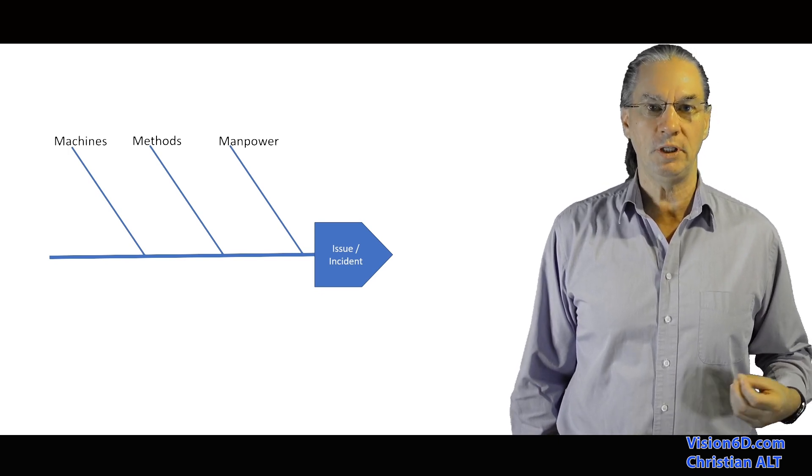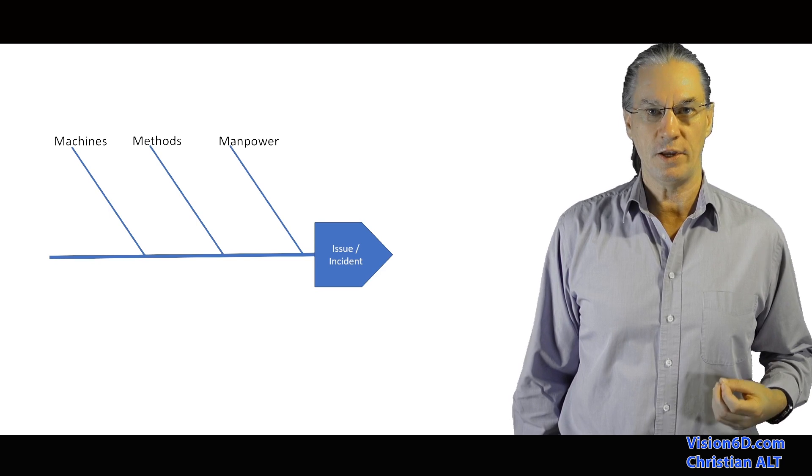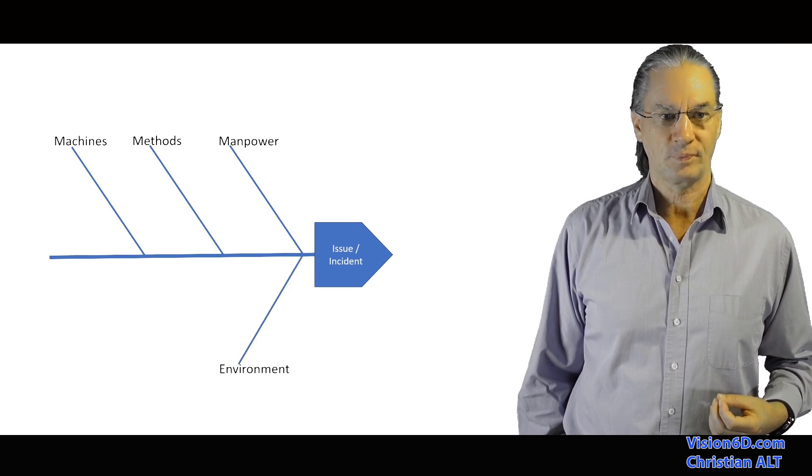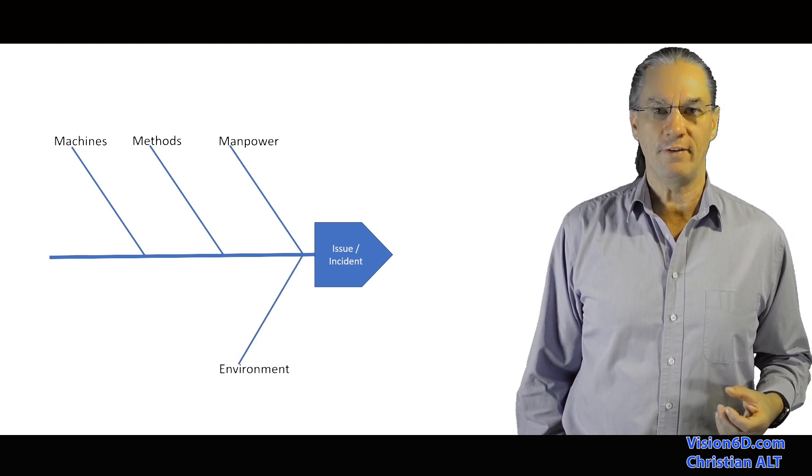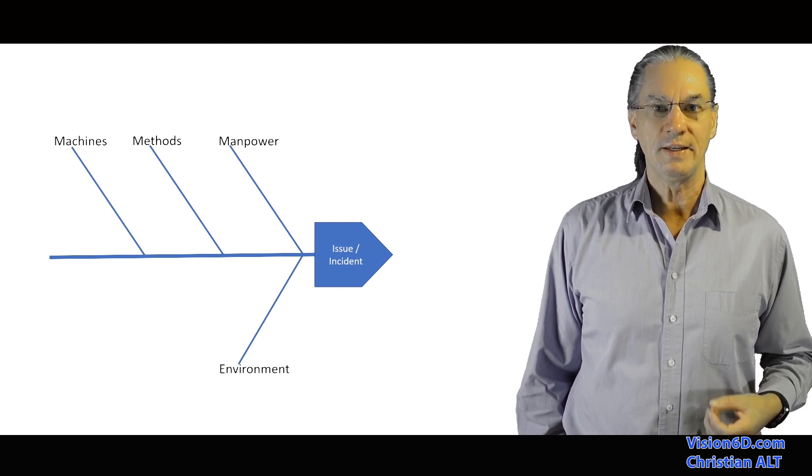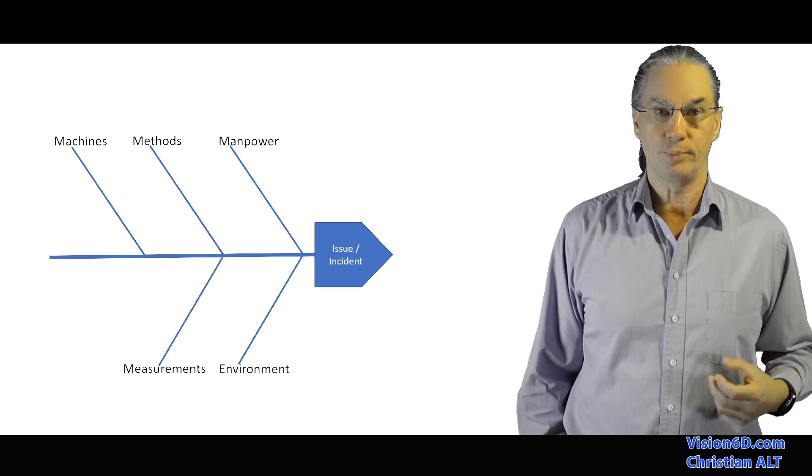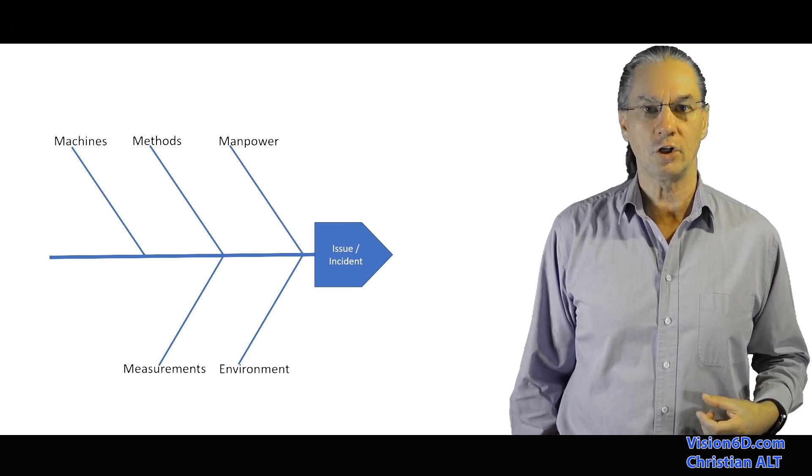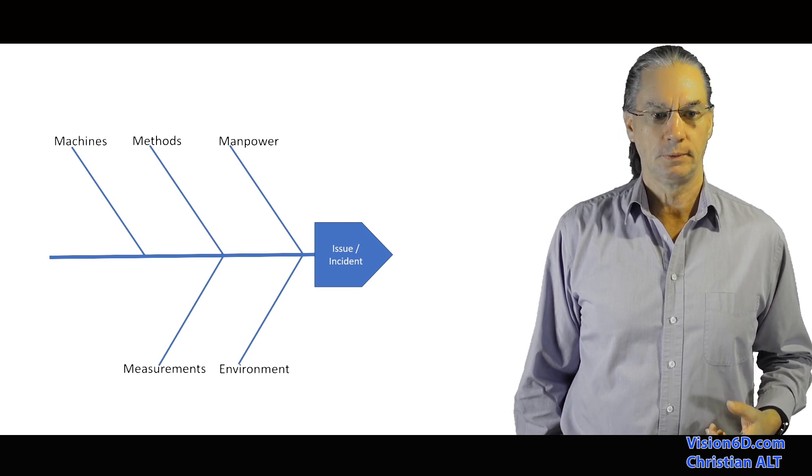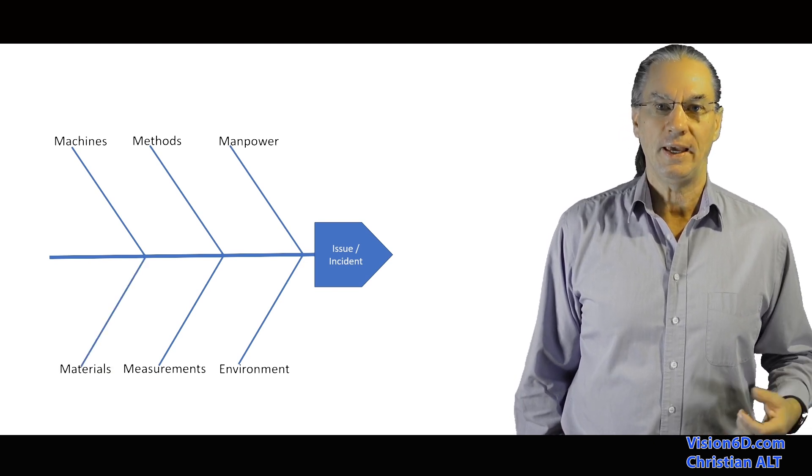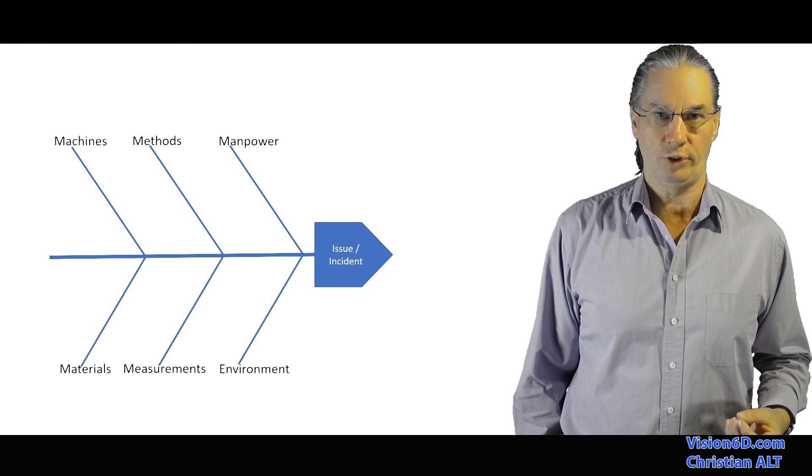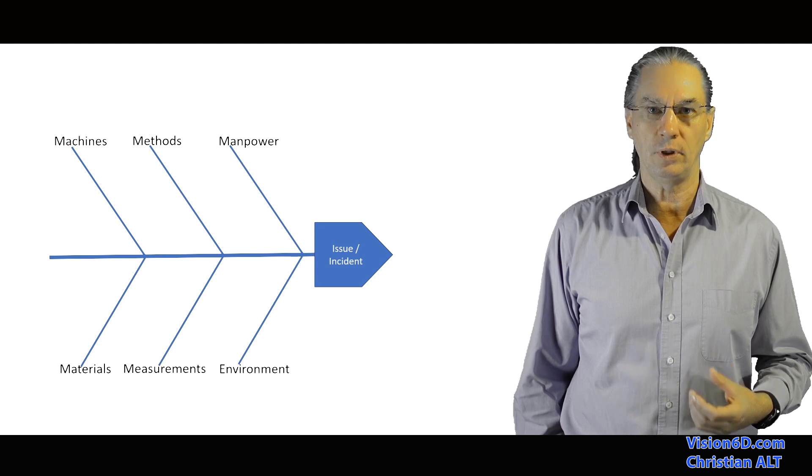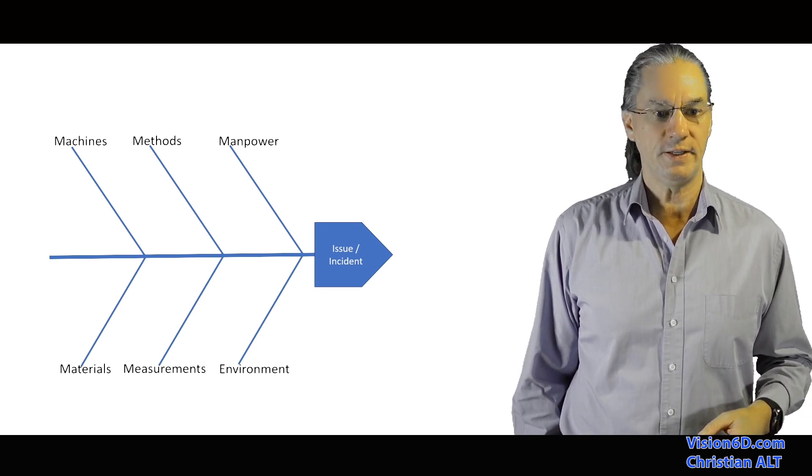By machines, you can really mean machines in the industry. In the service environment, it can be systems. And then after you have all the context in which evolves this company or the project, you can have measurements. Do we measure well? Are our measures accurate? And another point that can be material in the industry is the material we are using, for example, of enough good quality. These are examples.